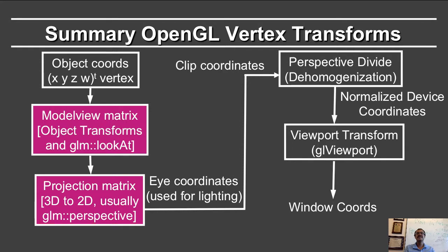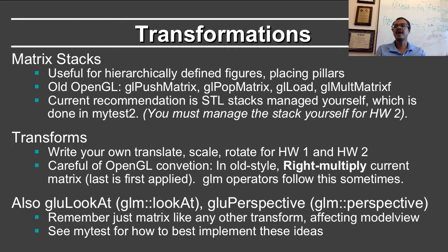We are most interested in this lecture in the model view and projection transformations, which are usually represented using matrix stacks corresponding to the model view and projection matrices. Matrix stacks are especially useful for hierarchically defined figures, such as a human body with a torso, hands, and legs — effectively you can see this as a scene graph in OpenGL, or a hierarchy of different shapes. They're also very useful for placing the pillars where we have the same geometry but place them with different transformations and colors. In old OpenGL, matrix stacks were handled with commands such as GL push matrix, GL pop matrix, GL load matrix, and GL multiply matrix.